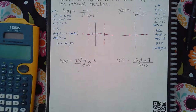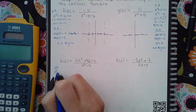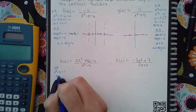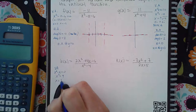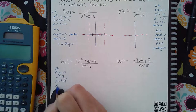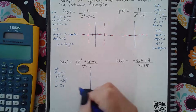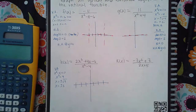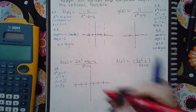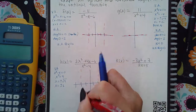Now for this problem, I'll find the vertical asymptotes by setting x squared minus four equal to zero. So x squared equals positive four, meaning x equals plus or minus the square root of four, which is plus or minus two. I have two vertical asymptotes: one at positive two and one at negative two.